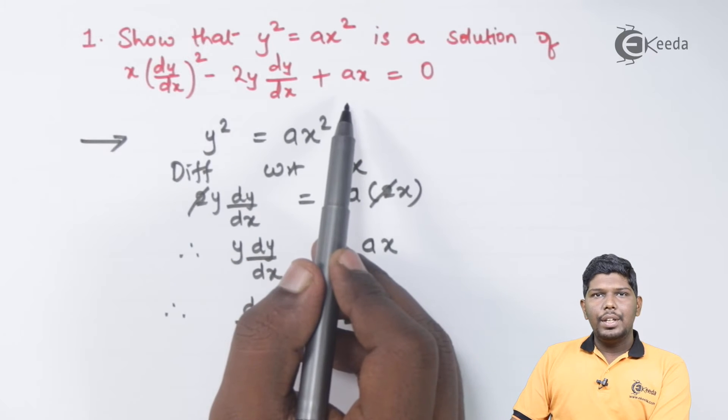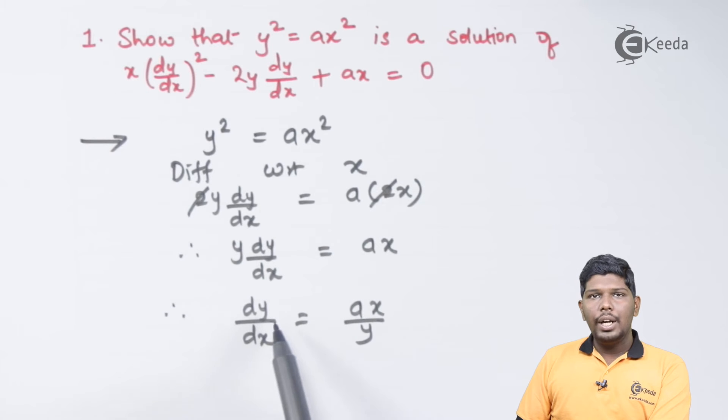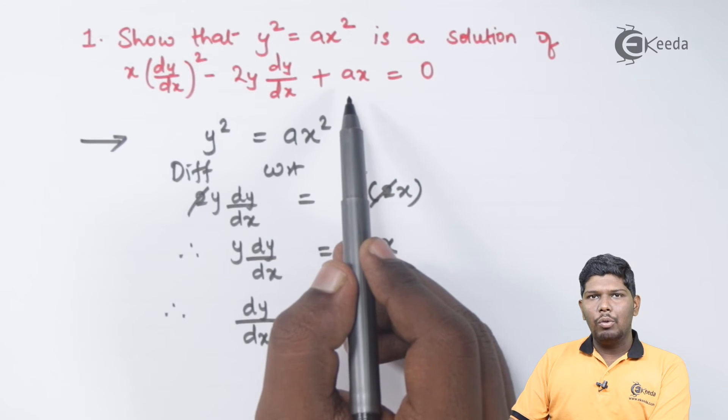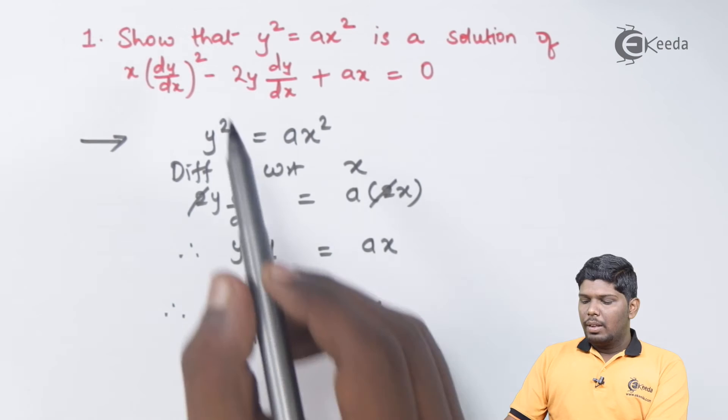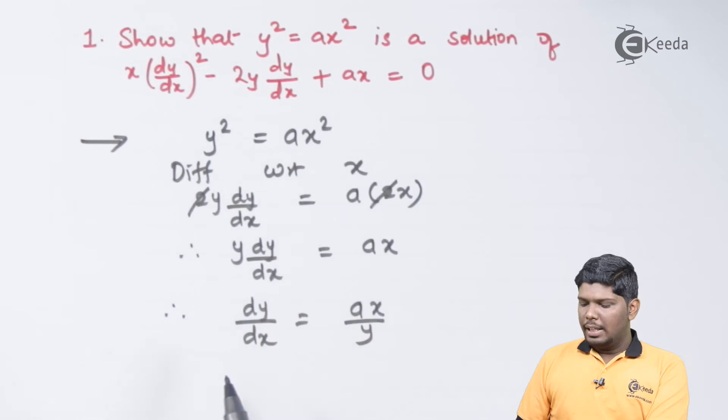As you can see in its differential equation, you cannot see a higher order derivative, so no need to differentiate it further. We have dy/dx. Now let us consider the LHS of this part and start solving it. It should be 0. Let us consider the LHS of this equation and substitute dy/dx as ax/y.